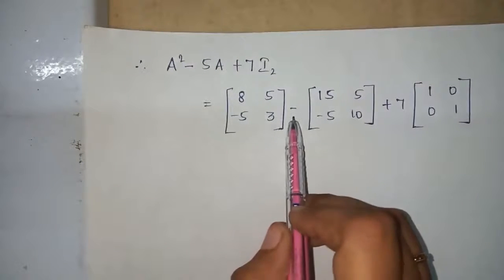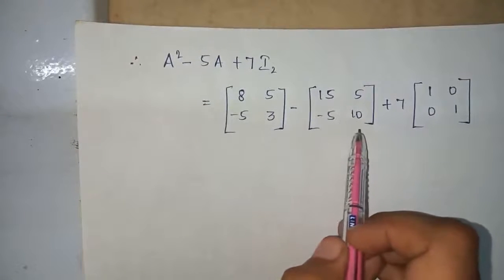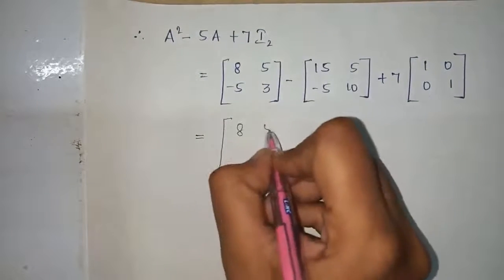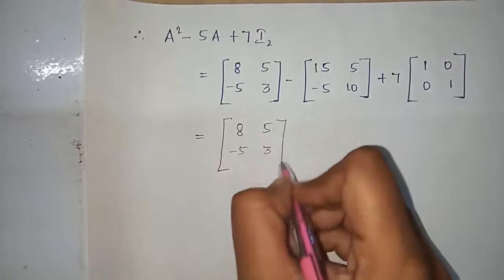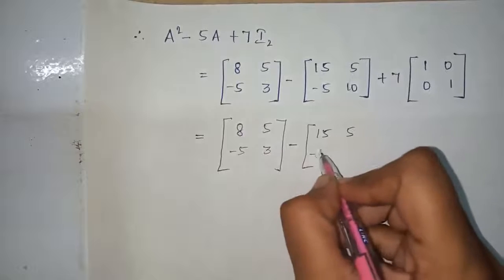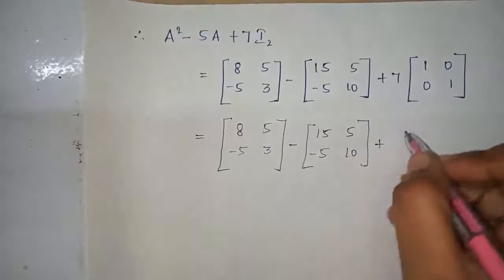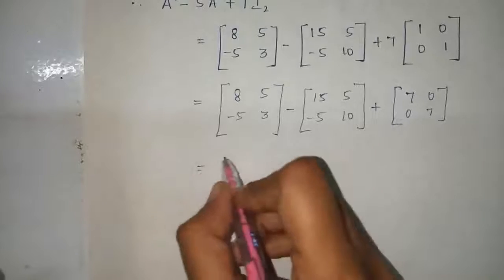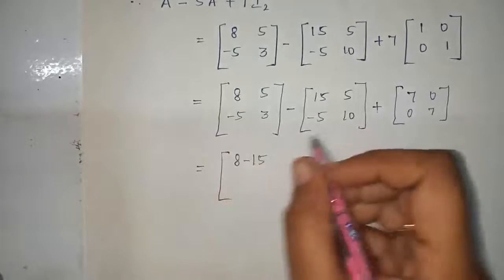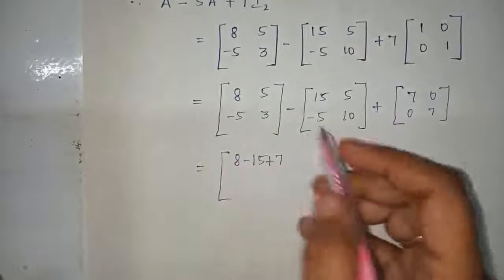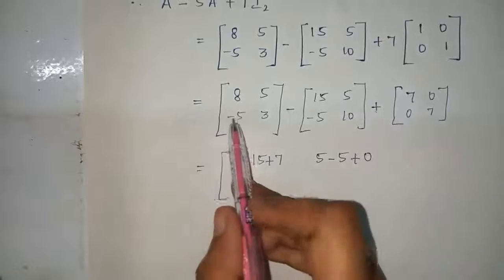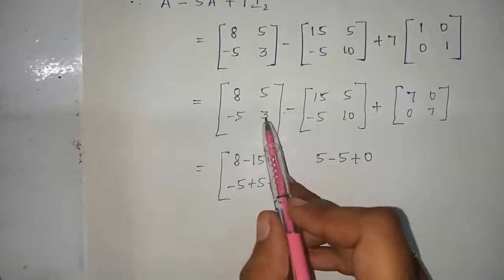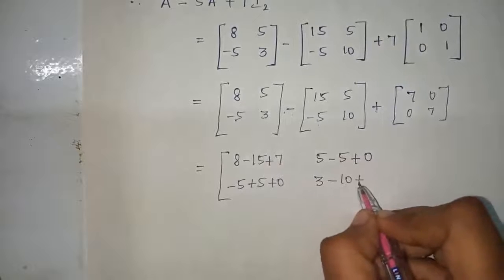Therefore A squared minus 5A plus 7I₂ equals the matrix 8 5 minus 5 3 minus 5 times 3 1 minus 1 2 plus 7 times the identity matrix. That is 8 5 minus 5 3 minus 15 5 minus 5 10 plus 7 0 0 7. Subtracting and adding corresponding elements: 8 minus 15 plus 7, 5 minus 5 plus 0, minus 5 plus 5 plus 0, 3 minus 10 plus 7.